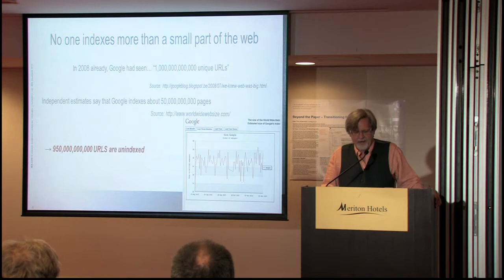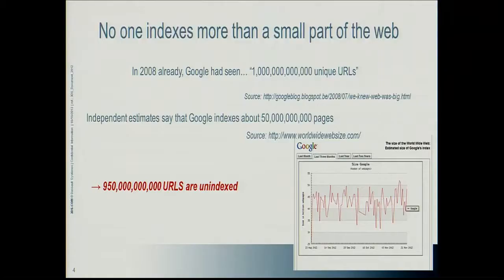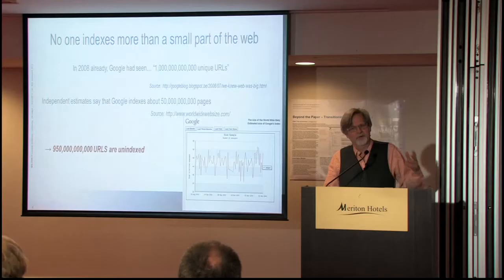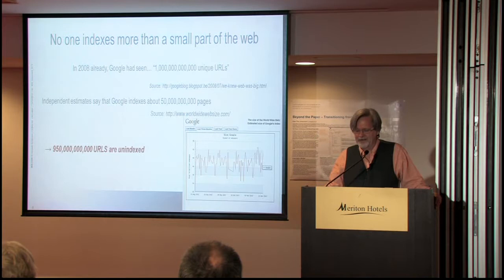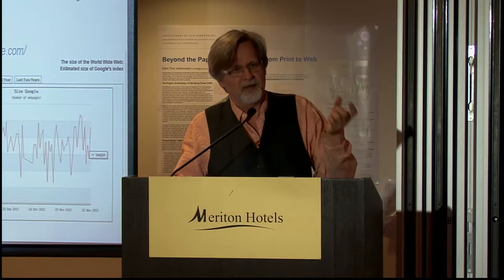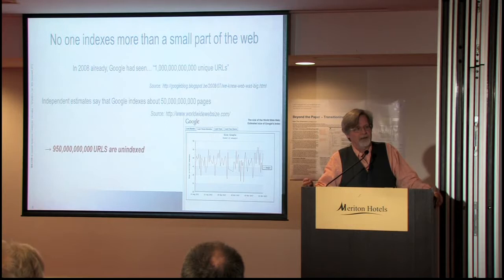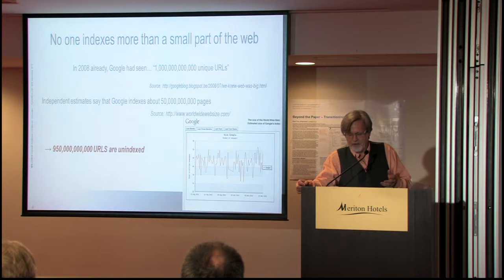An important fact is that no one indexes but a small part of the web. Google, in 2008, revealed that they have seen — not indexed, but seen — 1 trillion, that is 1,000 billion URLs. That's on their web blog; they say 'we knew the web was big.' Google used to publish on its home page how many pages it had in its index, and they stopped that around 2007–2008. So we can only estimate how many pages are in Google's index.